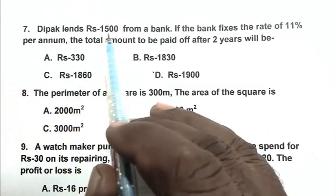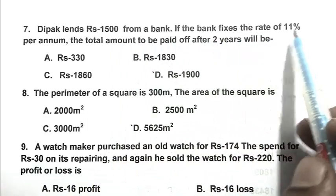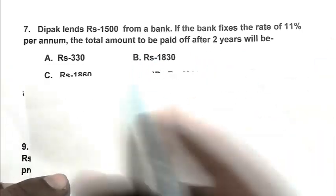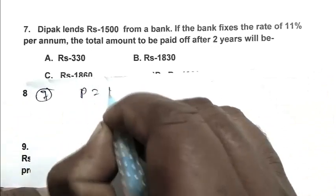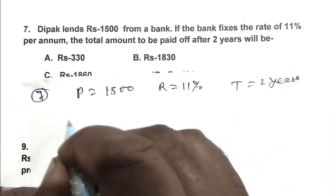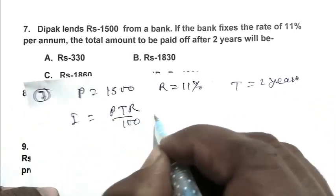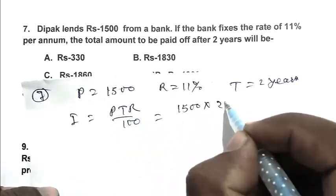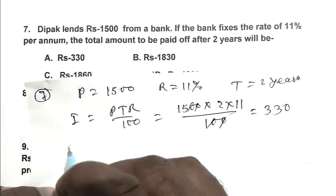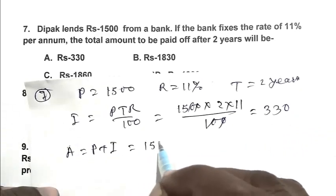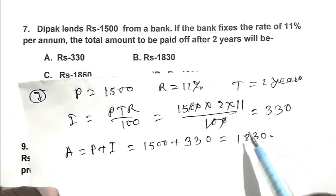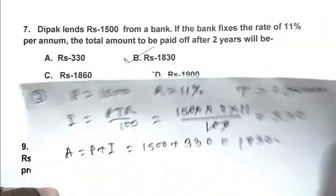Question number seven: Depok lends rupees 1,500 from a bank. If the bank fixes the rate of 11 percent per annum, the total amount to be paid off after two years will be. So friend, we calculate it from the formula. That is principle 1,500, rate 11 percent, time 2 years. So interest PTR by 100, that is 1,500 into T 2 years into rate 11 by 100, that is 330. So he has to pay back 1,830. B is the right answer.